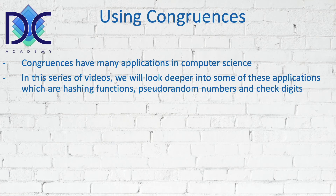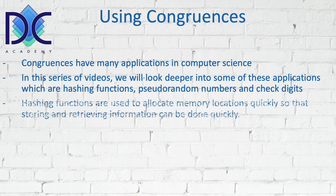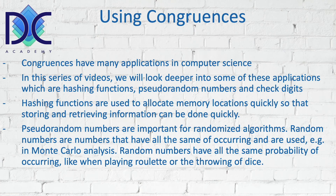In this series of videos we will look deeper into some of these applications. Those applications include hashing functions, which allocate computer memory space to data; pseudo-random numbers; and check digits. Hashing functions are used to allocate memory — they make sure that data are stored very quickly in a specific location and that we can find them back very easily too.